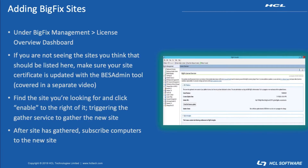Adding sites to BigFix is a pretty easy process. Down in the bottom left-hand corner of your screen you'll see BigFix Management, and then from that page the third option down will be your License Overview Dashboard. This is where you're going to control your license allocations and what sites are subscribed.